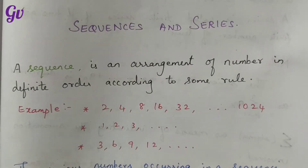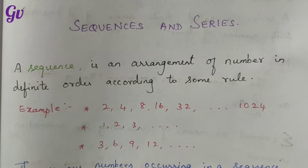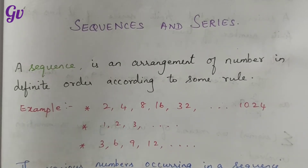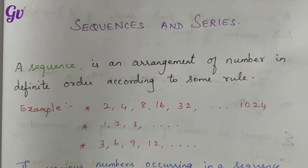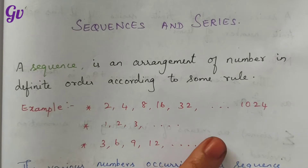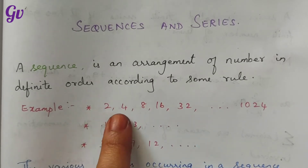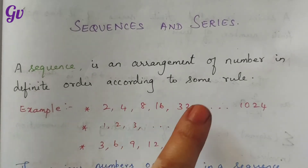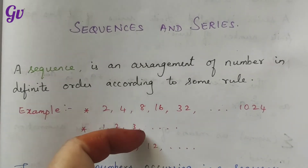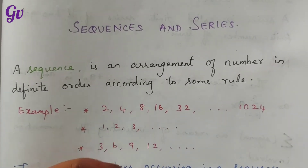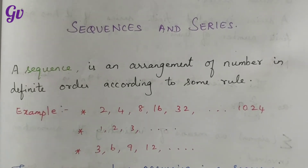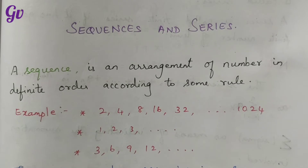Hello everyone. Let's see the sequence and series. A sequence is an arrangement of numbers in definite order according to some rules. A sequence should follow some rules — we have to arrange the numbers in definite order. The rule may involve multiplying a particular number to get the next number, or adding, subtracting, or dividing a particular number to get the next term.